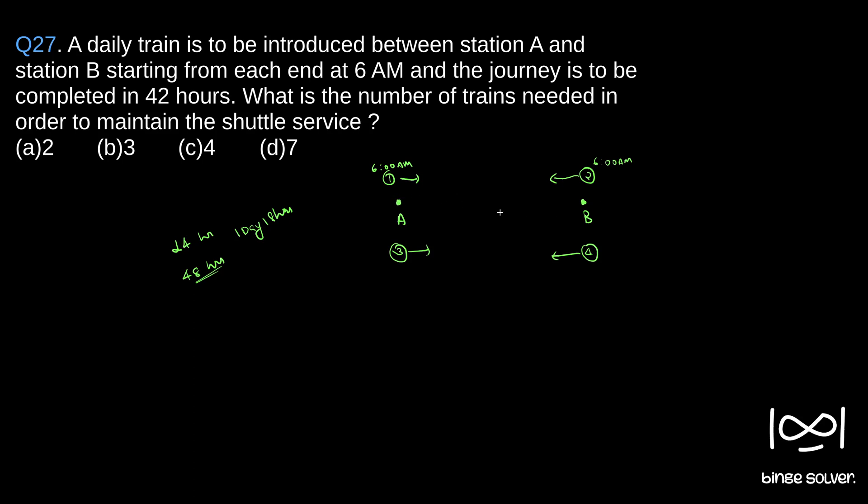So after now, all four trains can just cycle to run the shuttle service. So we need total four trains to run a daily shuttle service between A and B. So the solution here is C4. The solution to question 27 is C4.